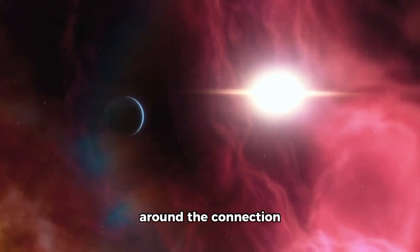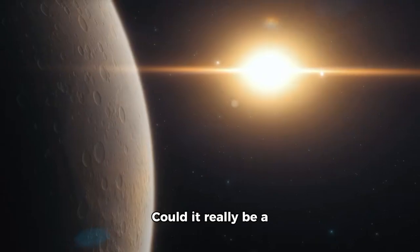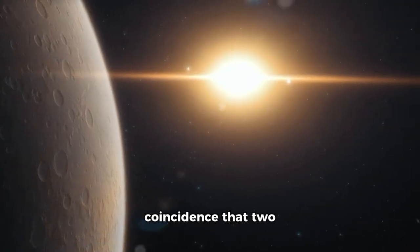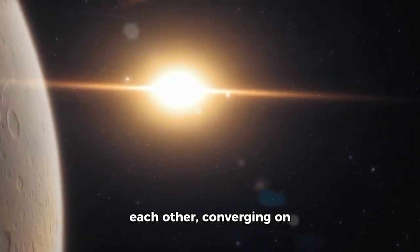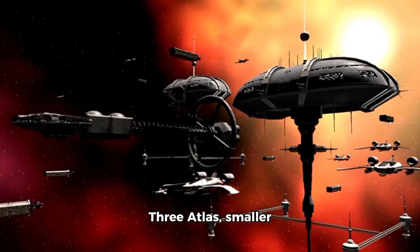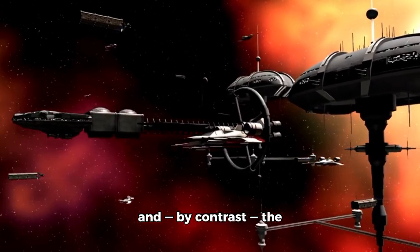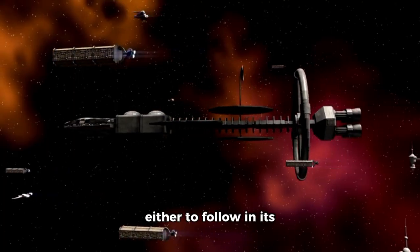Theories now swirl around the connection that exists between 3i Atlas and the SWAN. Could it really be a coincidence that two interstellar objects have arrived within weeks of each other, converging on the sun almost in tandem? To some, the pattern is undeniable. 3i Atlas, smaller, and by contrast, the SWAN radiates the scale of a command ship, a leviathan fortress.